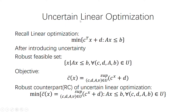Uncertainty linear optimization is next. We recall that linear optimization is of a simple form — we optimize over a linear function subject to a matrix inequality. After introducing uncertainty, the robust feasible set can be described as: x must satisfy the linear equation Ax ≤ b for any A and B belonging to the uncertainty set U. The objective function will take the supremum of the linear function of x.